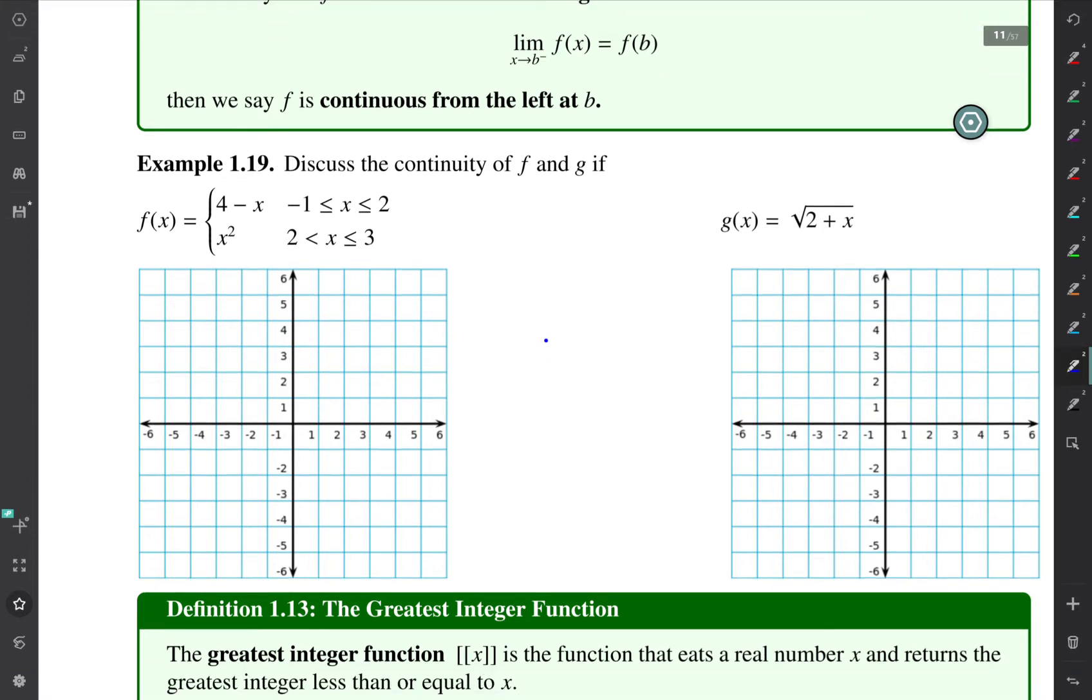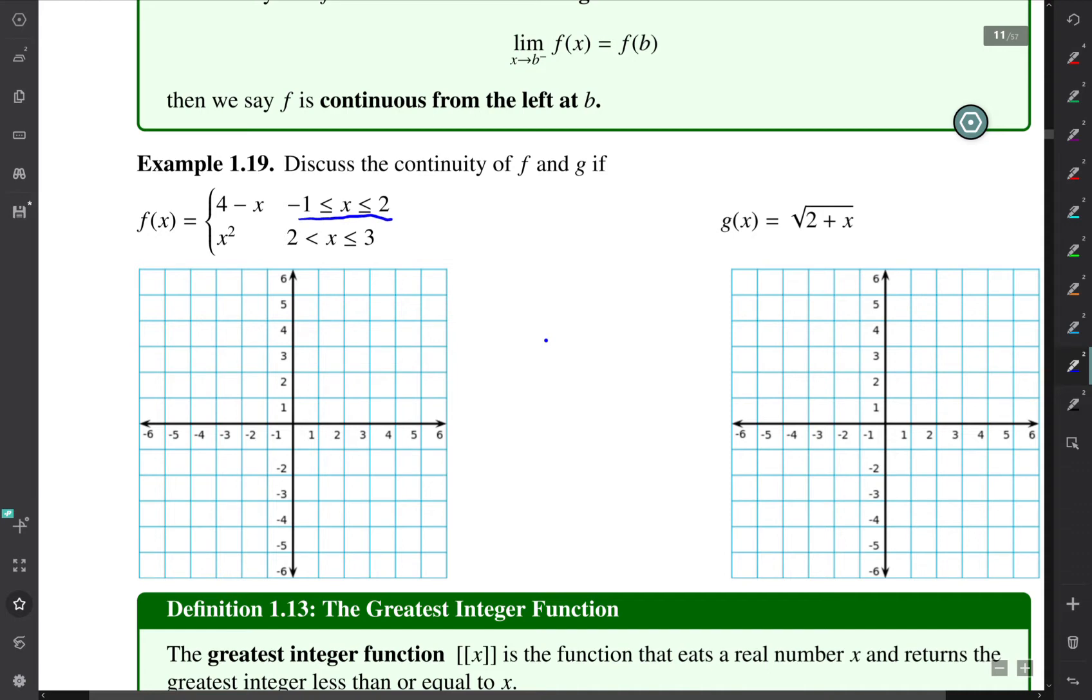Our goal in example 1.19 is to analyze the continuity of the functions f and g. Now f is a piecewise function, defined to be 4 minus x when x is between negative 1 and 2, including the points negative 1 and 2, and then when x is greater than 2 but less than or equal to 3.